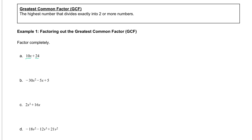What we want to do is look at both of those terms and determine what is the greatest common factor that we can divide 10 and 24 by. The biggest number that goes into 10 and 24 exactly is 2. So what we're going to do is take the 2 out in front and multiply it by what's left.